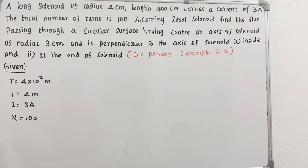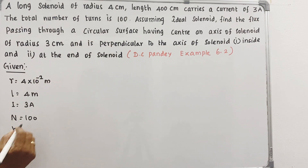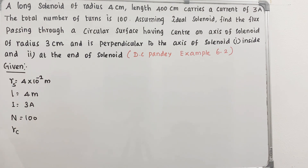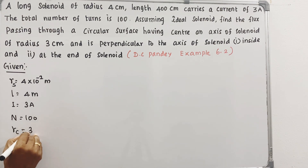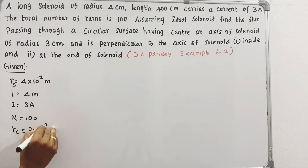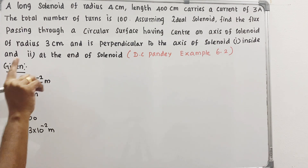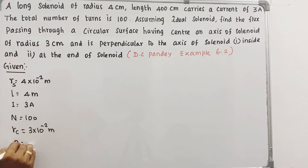Assuming an ideal solenoid, find the flux passing through a circular surface having its center on the axis of the solenoid with radius 3 centimeters. The surface is perpendicular to the axis of the solenoid, so the angle theta between B and the normal to the surface is 0 degrees.